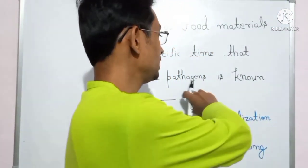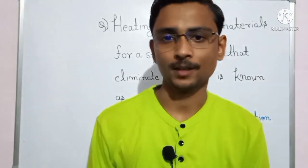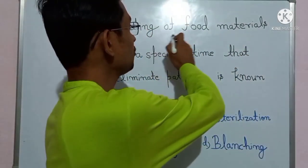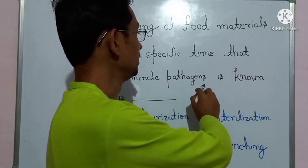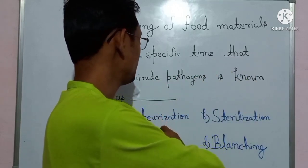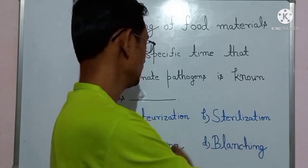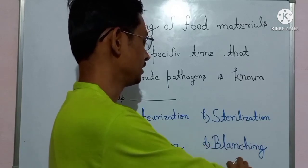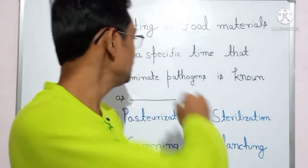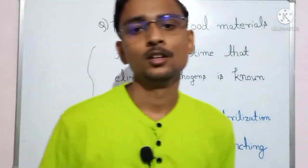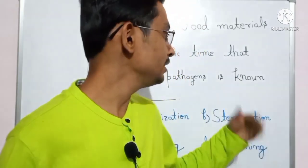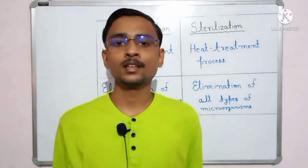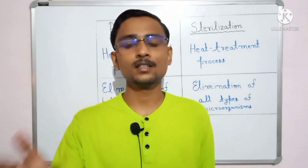Let us first see how a question comes in competitive exams from this topic. 'Heating of food materials for a specific time that eliminates pathogen is known as — pasteurization, sterilization, canning, or blanching?' This is the pattern. Once we understand pasteurization and sterilization, we will be able to solve it. Let us understand the difference between pasteurization and sterilization.